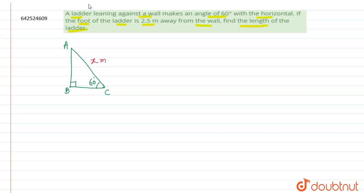What else is given? The foot of the ladder, that means this point is 2.5 meter away from the wall. So this is the wall end, so we can write this distance as 2.5 meter. Clear.